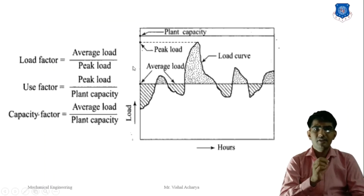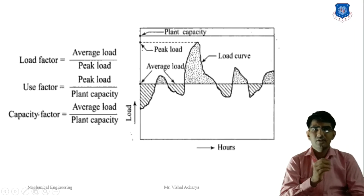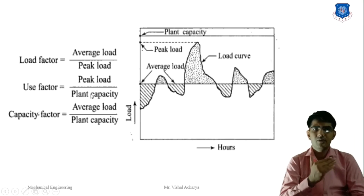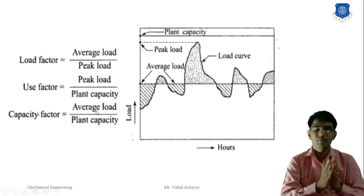The graph represents the year's average load, showing peak load and plant capacity. From this: load factor = average load / peak load; use factor = peak load / plant capacity; and capacity factor = average load / plant capacity.